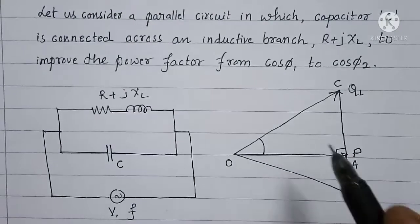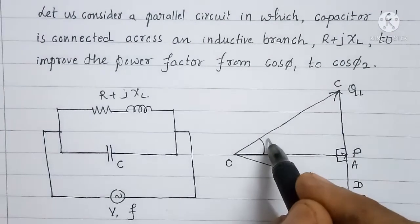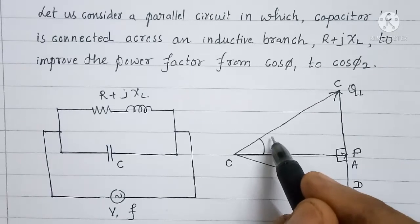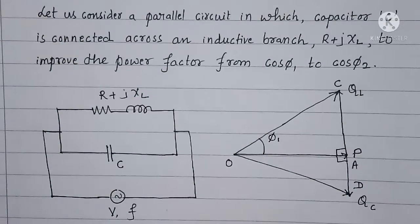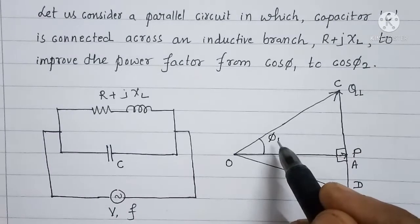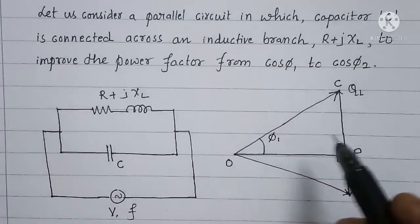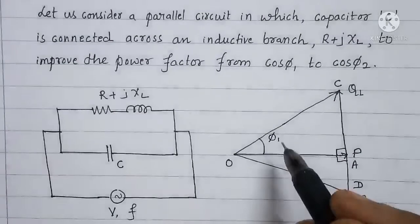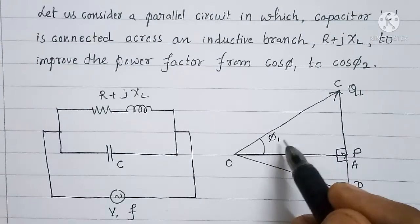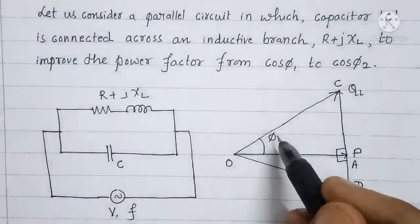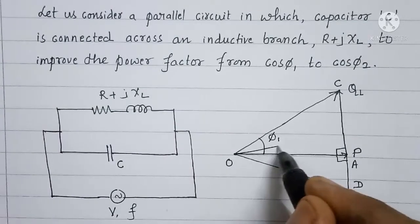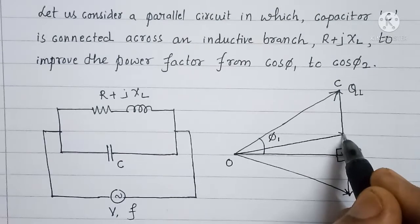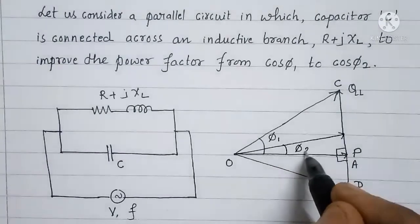We know that the power factor of the RL branch is cos φ1, so the phase angle is φ1. To improve the power factor means to increase the value of cos φ1, which means decreasing the value of φ1. If cos φ1 improves to cos φ2, then φ1 will decrease to φ2. So let us draw a phasor here at an angle of φ2.